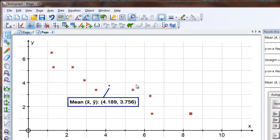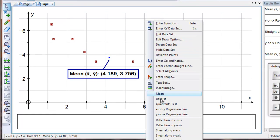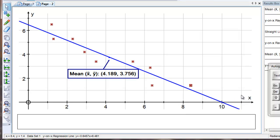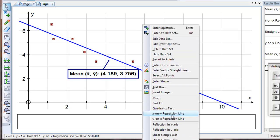If we select the data set and right click, look at the Y on X regression line, there it is. X is reckoned to be the independent variable, and that is the dependent variable. So Y on X is correct. If you want X on Y, it is available.